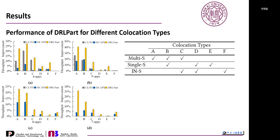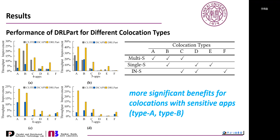Results show how different collocation types affect DRL-Part's performance. Collocations are classified into six types according to the resource sensitivity of the applications. For example, collocations where applications are sensitive to multiple resources are called type multi-apps, where an application is considered sensitive if performance degradation exceeds 15% when resource allocation changes from maximum to minimum. The throughput improvement of DRL-Part is more significant for collocations with more sensitive applications, such as type A and type B, because improper resource partitioning causes more remarkable performance degradation for these types.